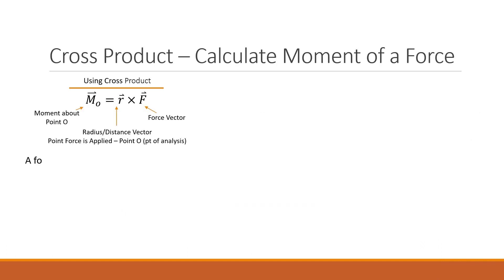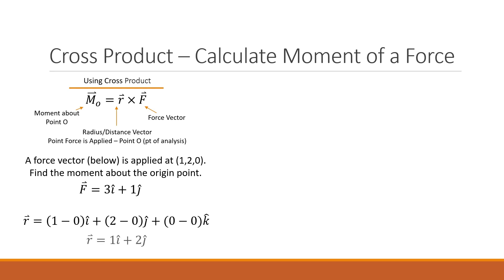For the first method where we use the cross product to calculate a moment, let's look at an example problem where we have a force vector applied at the point 1x, 2y, and 0z. Find the moment about the origin point. So our r vector is the point that the force is applied to minus the origin point, giving us an r vector of 1i, 2j, and 0k.